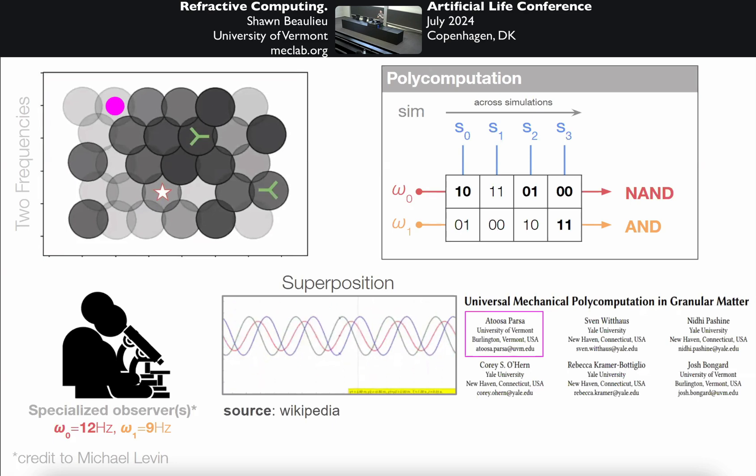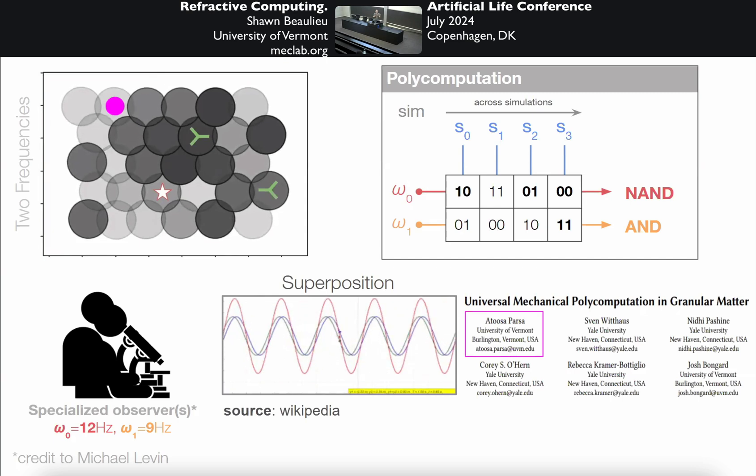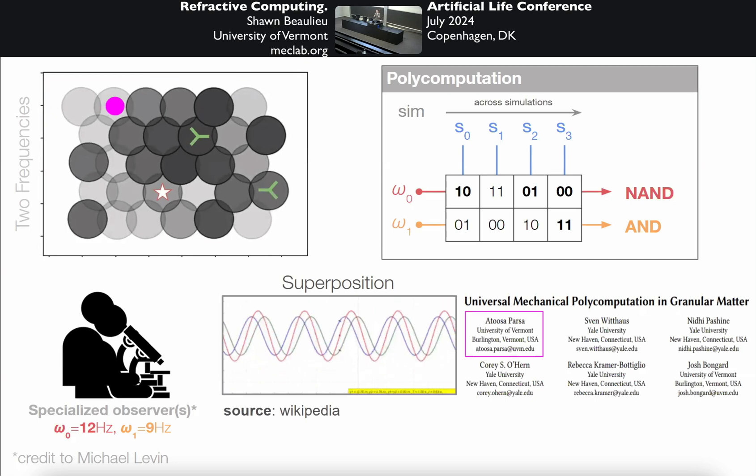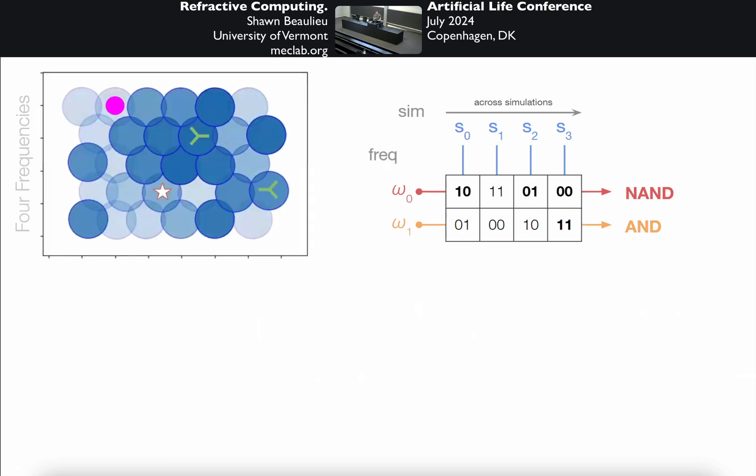I should also say that there's a connection to reservoir computing, given yesterday's talk, the keynote talk. But I think there are important differences between polycomputation and reservoir computing. First is that in our system, at least, we optimize the physical system that's doing computing, whereas in reservoir computing, you typically don't. And then the second thing with multitasking and reservoir computing, you need a separate readout function for each task that you're performing, whereas in polycomputation, you could potentially have a single readout system if that system is polycomputational. There's no reason why we have to stop at just two computations over two frequencies. We can increase the computational density of this sheet depending on the complexity of the parts that we use or the power of the evolutionary algorithm that we deploy.